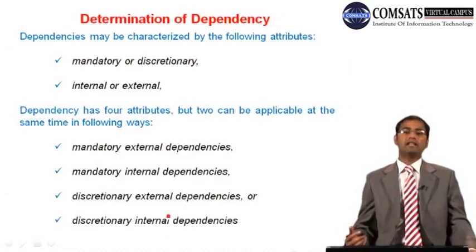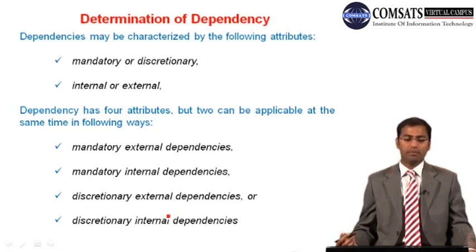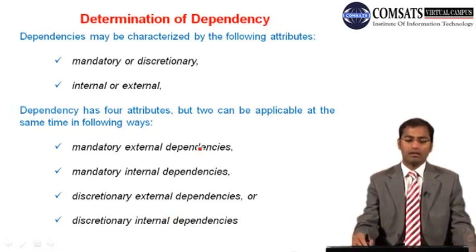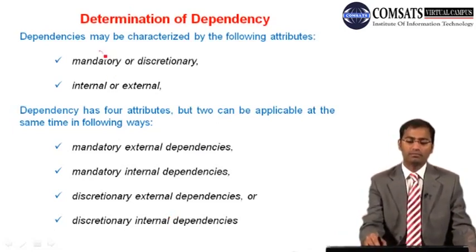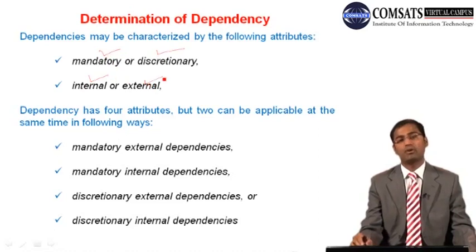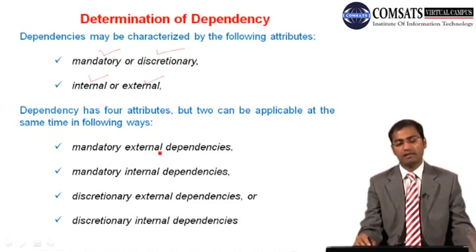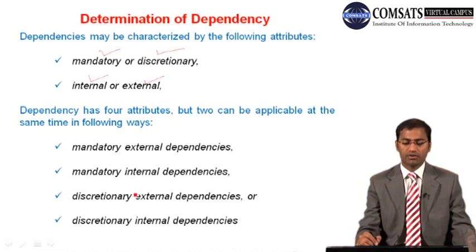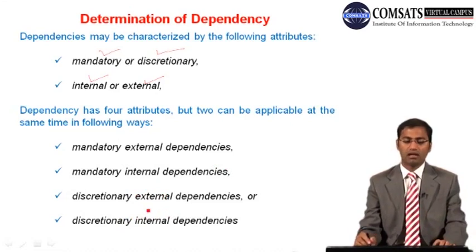Dependencies may be characterized by four attributes: mandatory or discretionary, and internal or external. These combine into four types: mandatory external, mandatory internal, discretionary external, and discretionary internal. Mandatory dependencies are legally or contractually required or inherent in the nature of the work — for example, it is impossible to erect a superstructure until the foundation is built, or a prototype must be built before it can be tested. Mandatory dependencies are also called hard logic or hard dependencies.